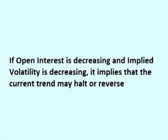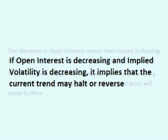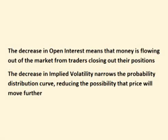If open interest is decreasing and implied volatility is decreasing, it implies that the current trend may halt or reverse. The decrease in open interest means that the number of outstanding contracts is going down from traders closing out their positions. And the decrease in implied volatility means that the market is stating that the chance of price moving further is decreasing.